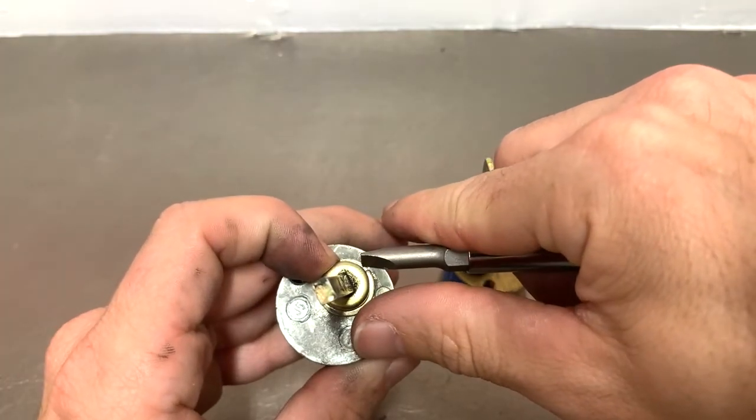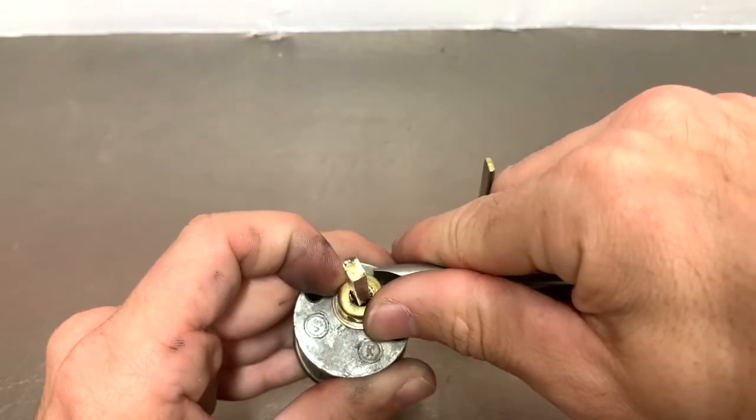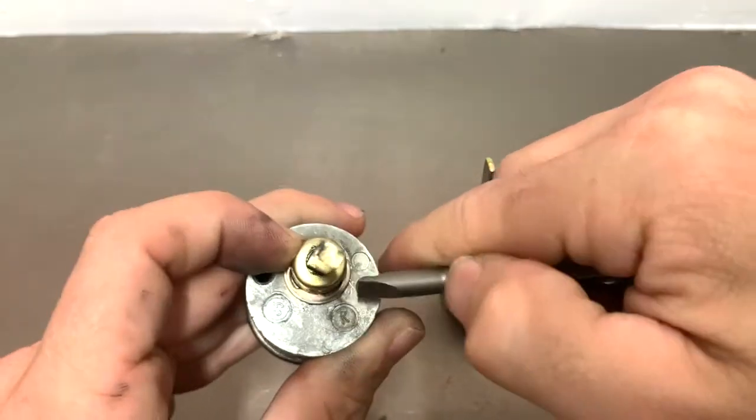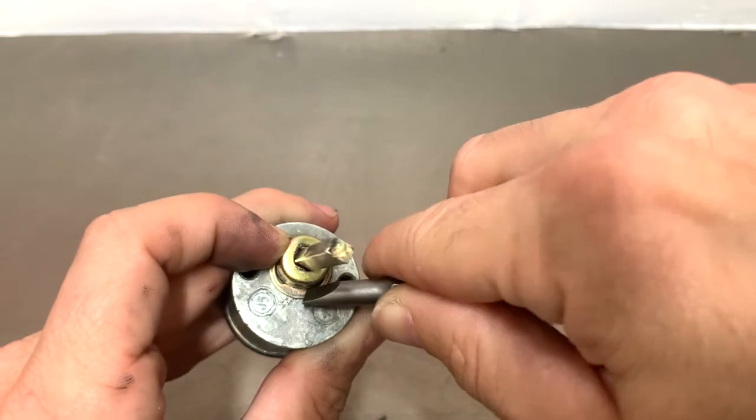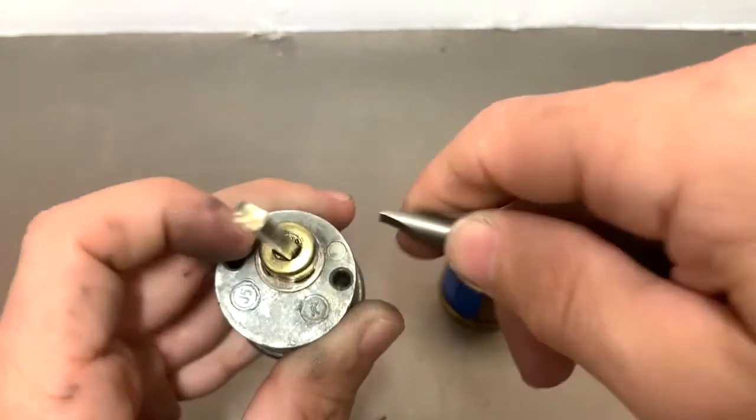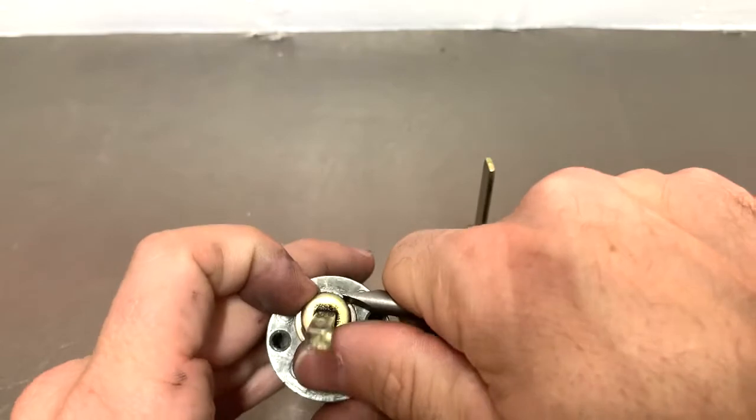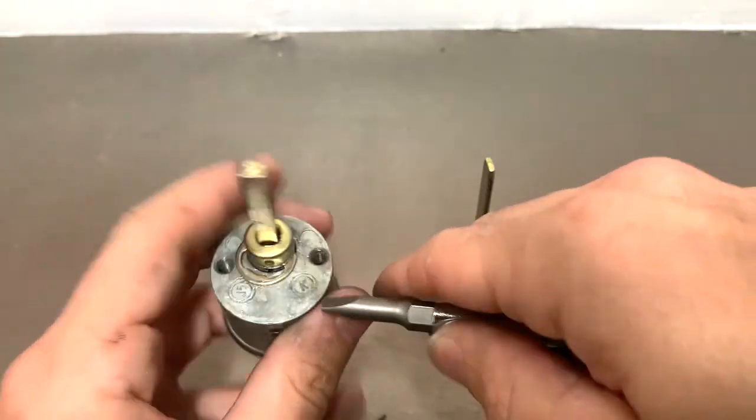Put the flat part of your screwdriver against this side and just pry back. Once you get a little gap you can kind of fit your screwdriver in. Sometimes this one's a little on the big side.